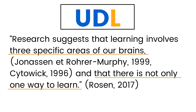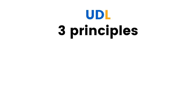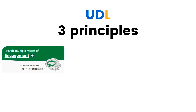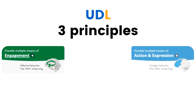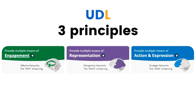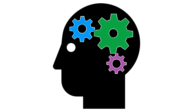These assumptions are embodied within three UDL principles: providing multiple means of engagement, multiple means of action and expression, and multiple means of representation. Usually we see these three principles lined up like this with three different images of the brain. I also like to look at it like this because we don't have three different brains — it's all different parts of the same brain, and these are different networks that work together.